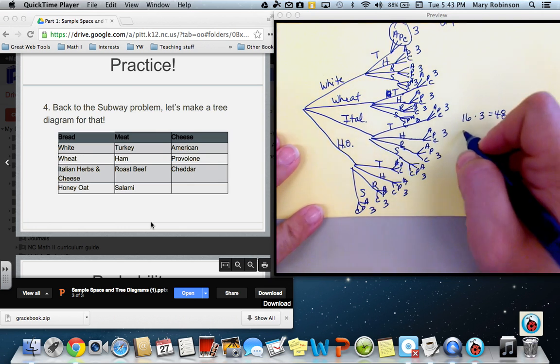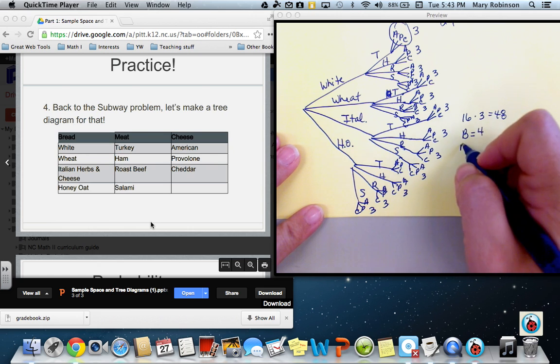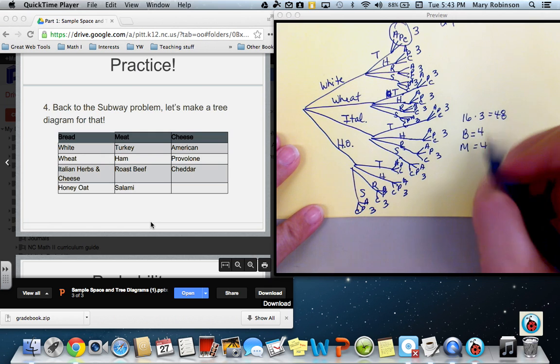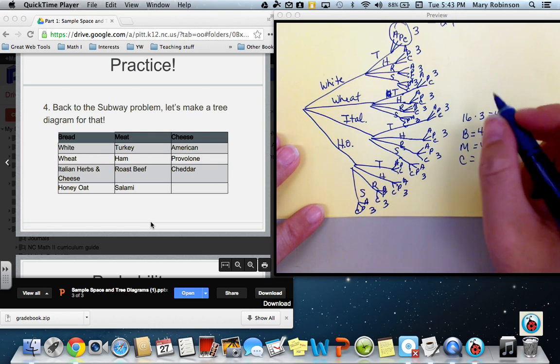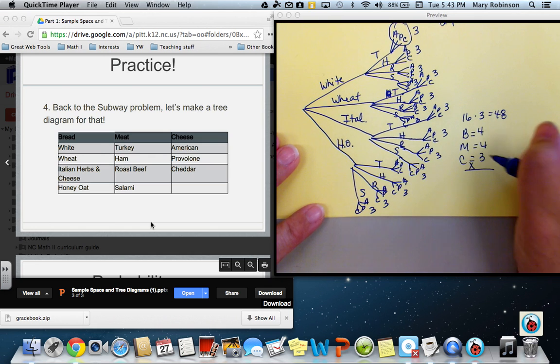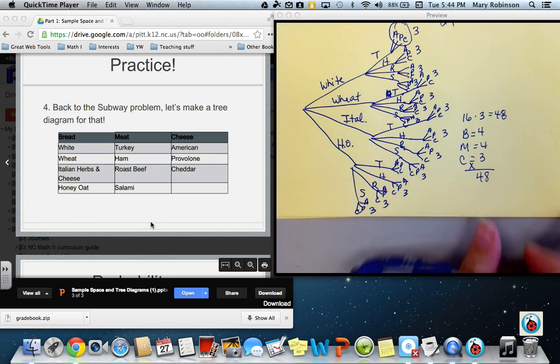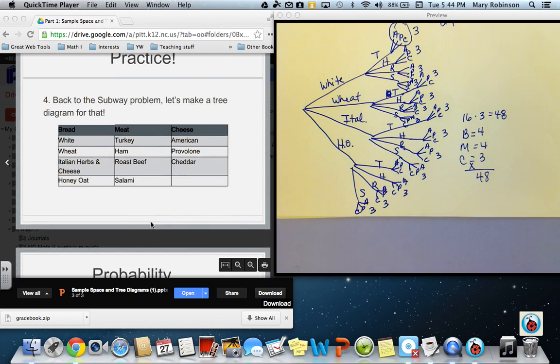And 16 times 3 gives us 48 possible choices or combinations. Notice we can also determine the total number of combinations by recognizing that for bread, there were four choices. For meat, there were four choices. And for cheese, three choices. So if we multiply those together, 4 times 3 is 12 times 4 is also 48. So be sure you know how to create those tree diagrams.